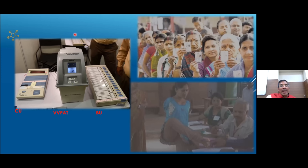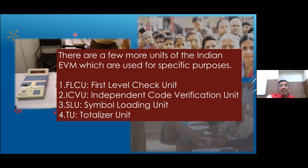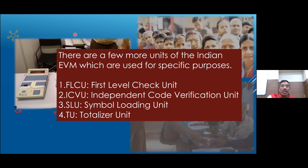The CU, BU, and VVPAT are the three main units. There are also other units for specific purposes: the First Level Check Unit (FLCU) tests machines before they are pressed into service. There are also an Independent Code Verification Unit, Symbol Loading Unit, and Totalizer Unit. The Independent Code Verification Unit can verify the software code in the machines. The Symbol Loading Unit is used to load symbols for printing on the VVPAT. The Totalizer Unit can connect multiple CUs and total their counts during counting.